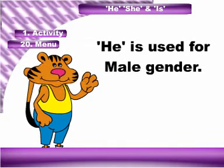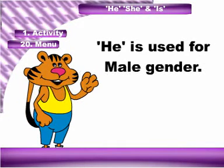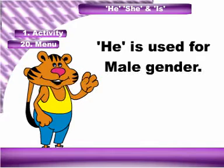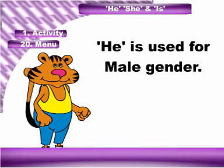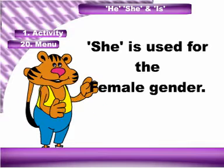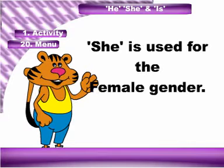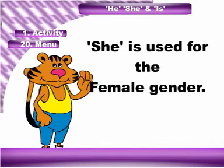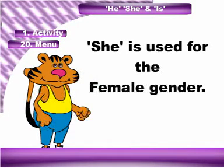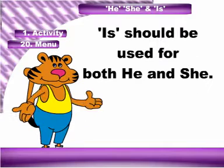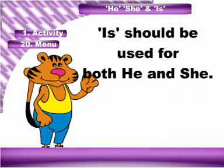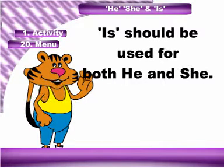Look and say: he, she, and is. He is used for male gender. She is used for the female gender. Is should be used for both he and she.